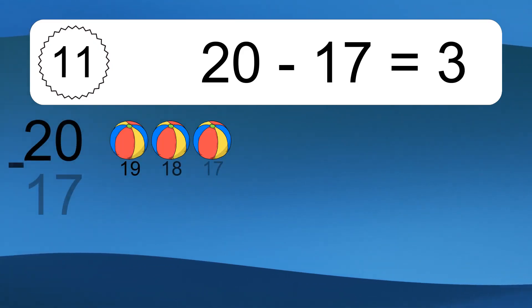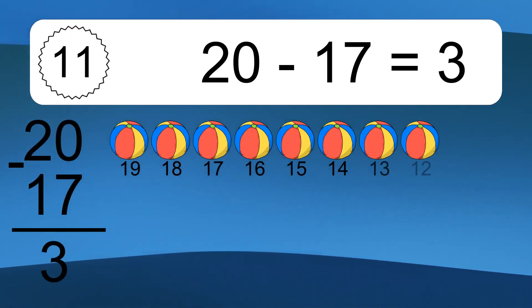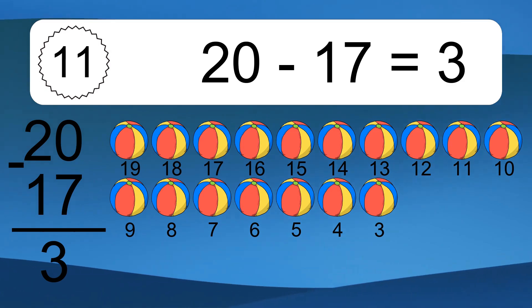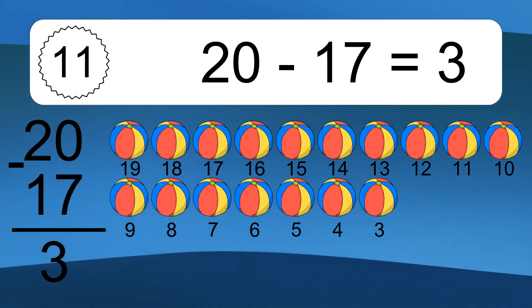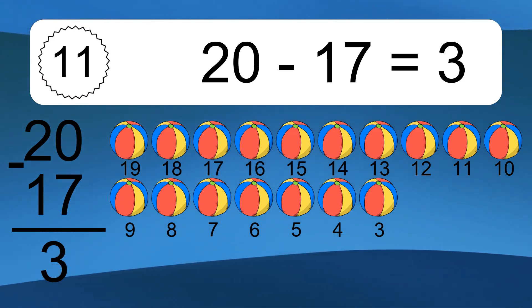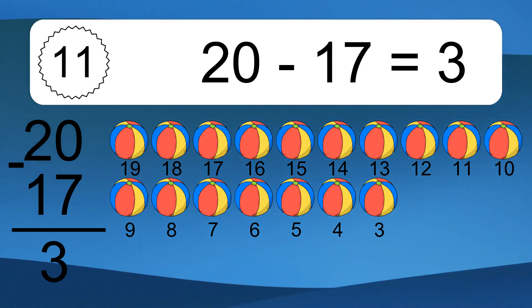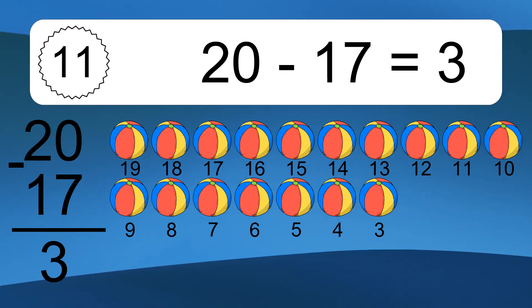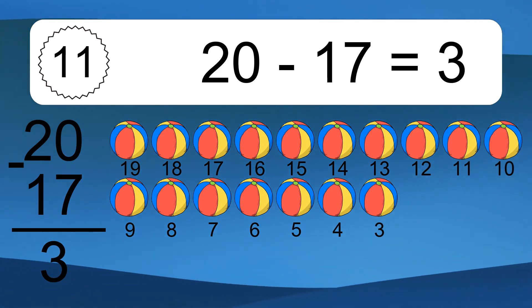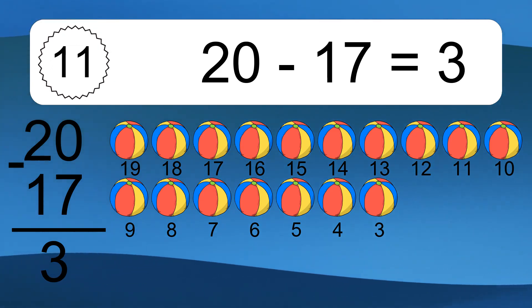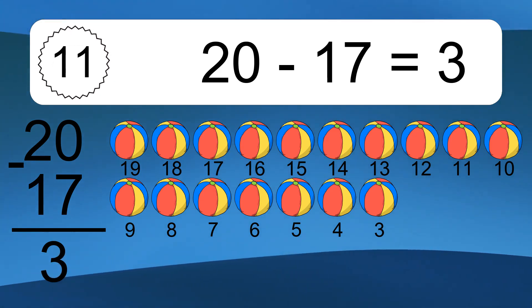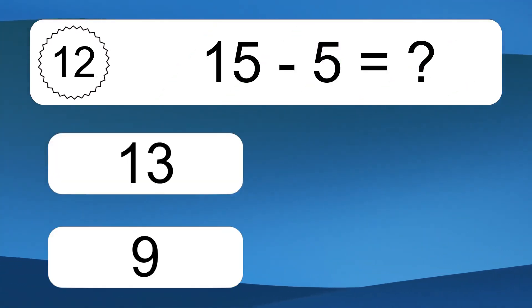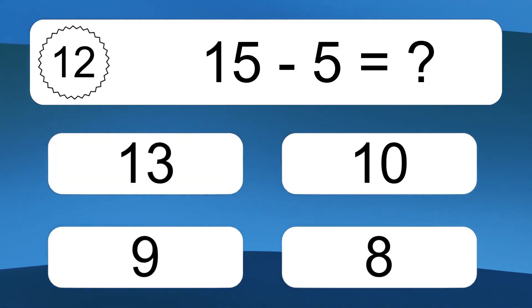20 minus 17 equals what? 20 minus 17 equals 3. Let's count it: 19, 18, 17, 16, 15, 14, 13, 12, 11, 10, 9, 8, 7, 6, 5, 4, 3.